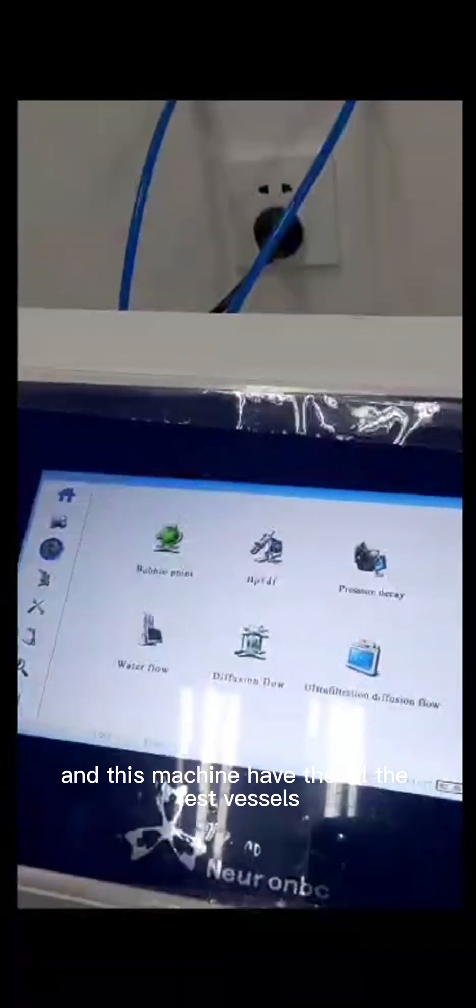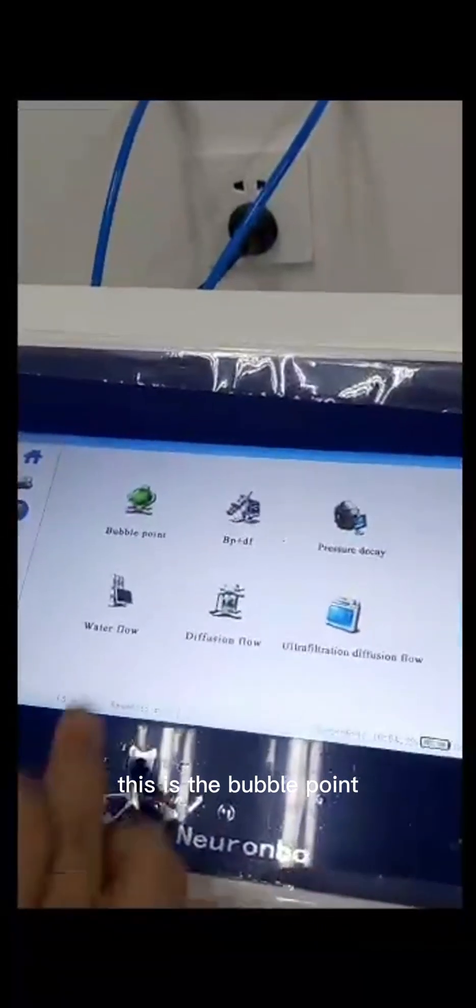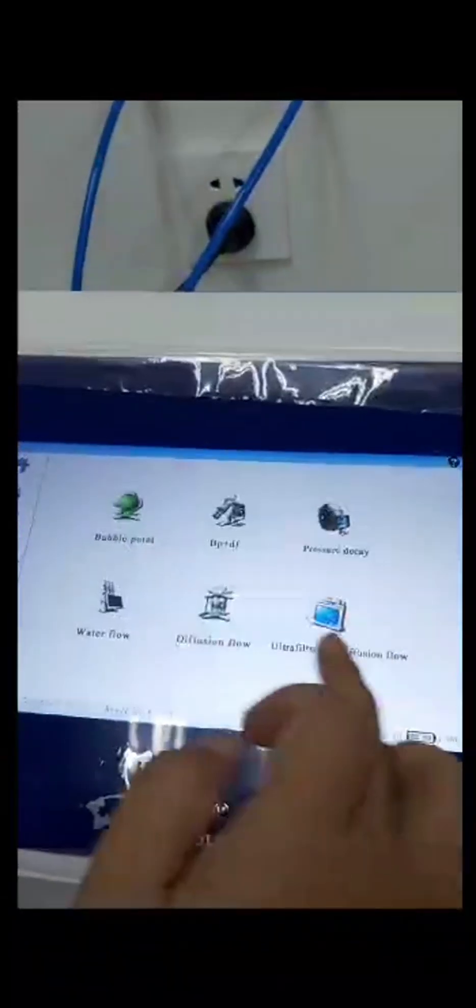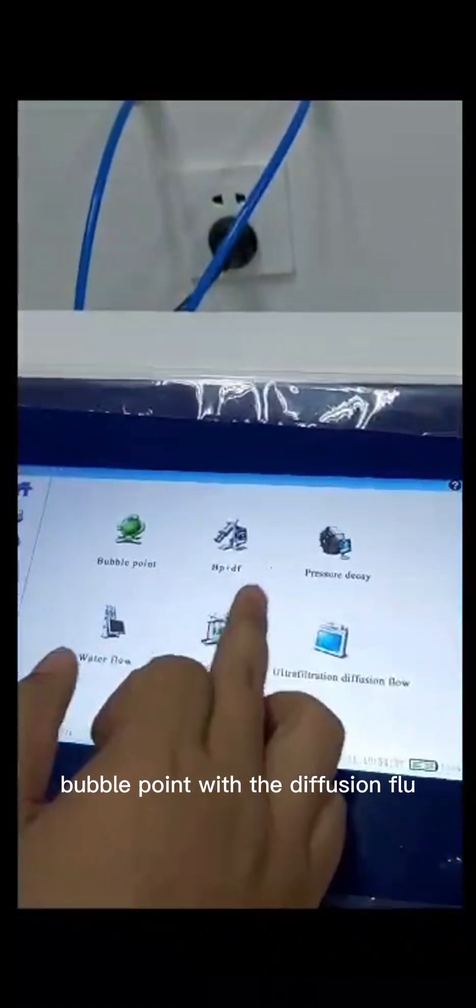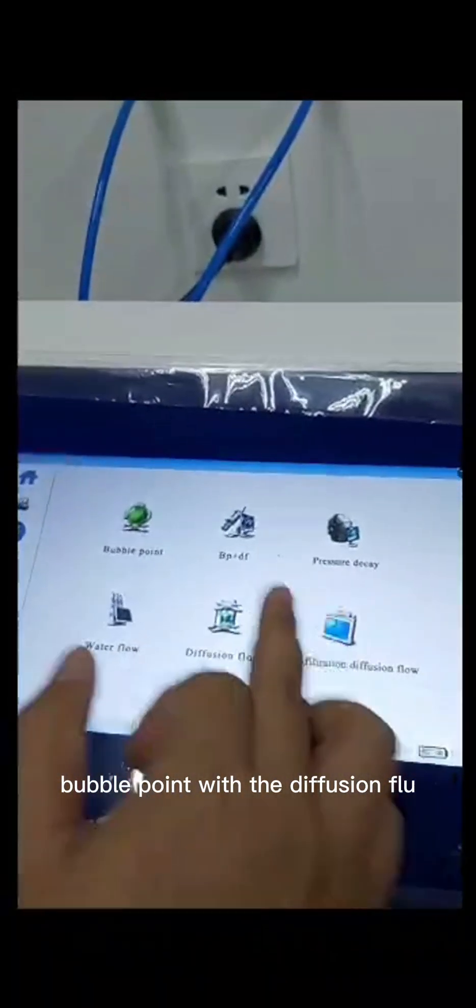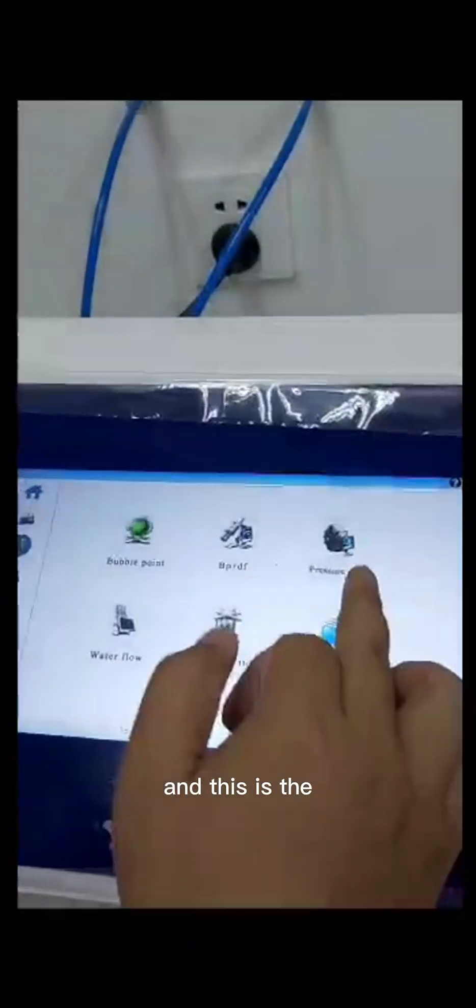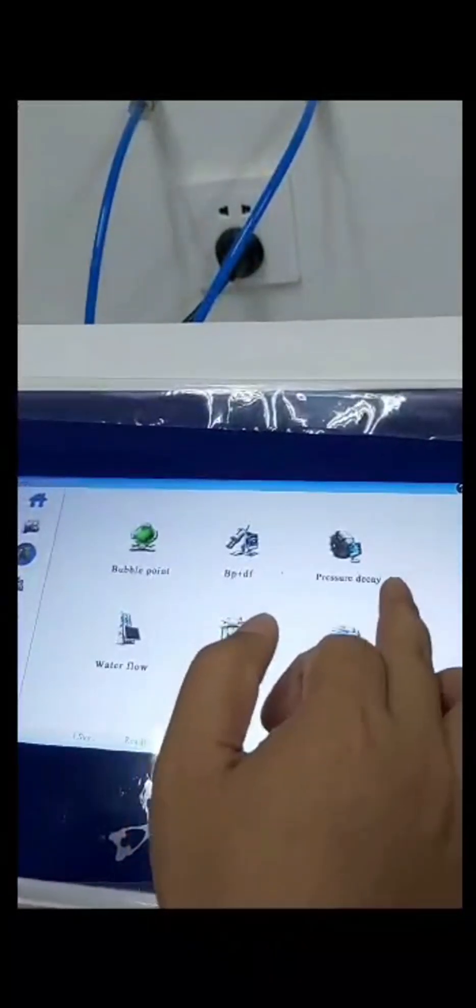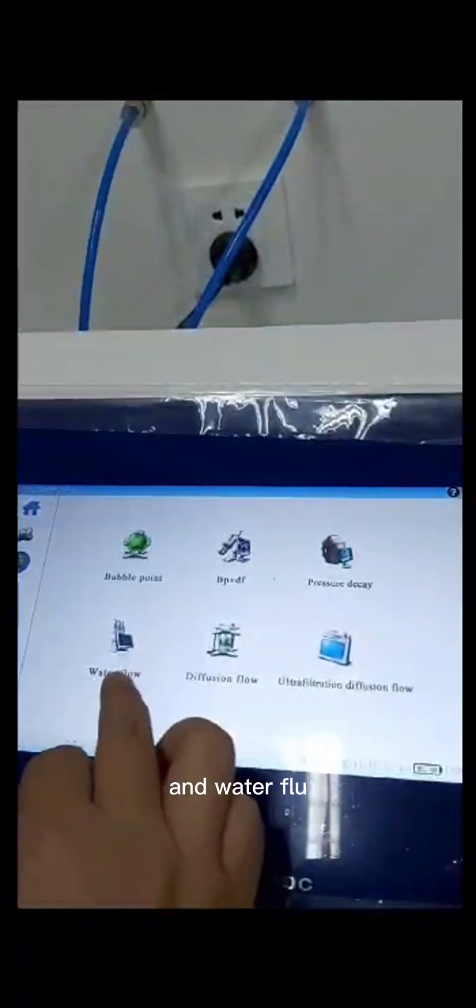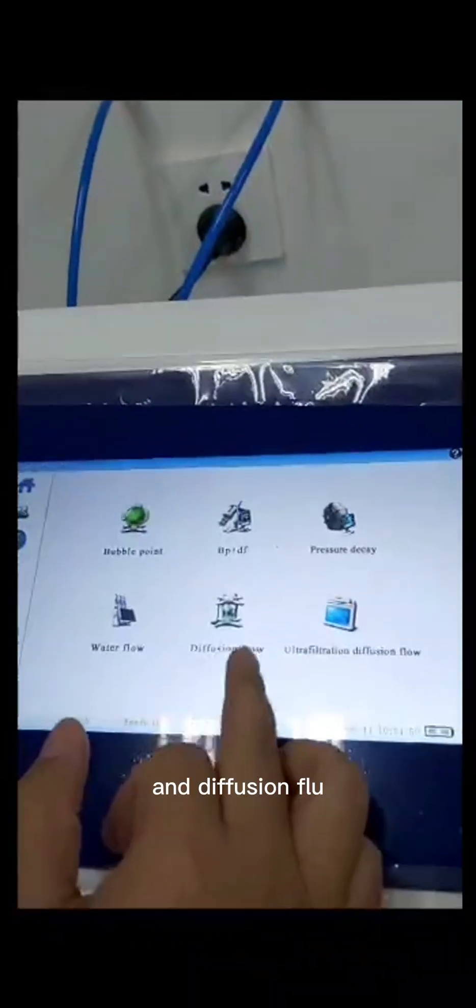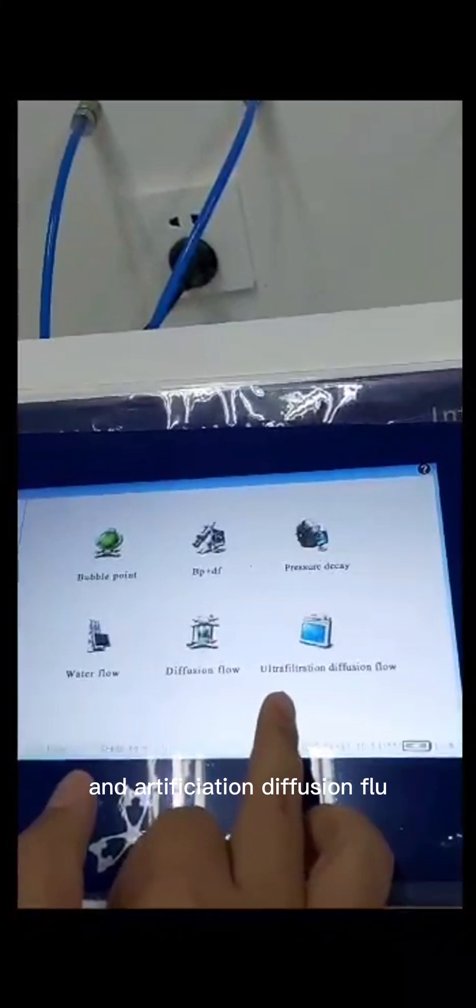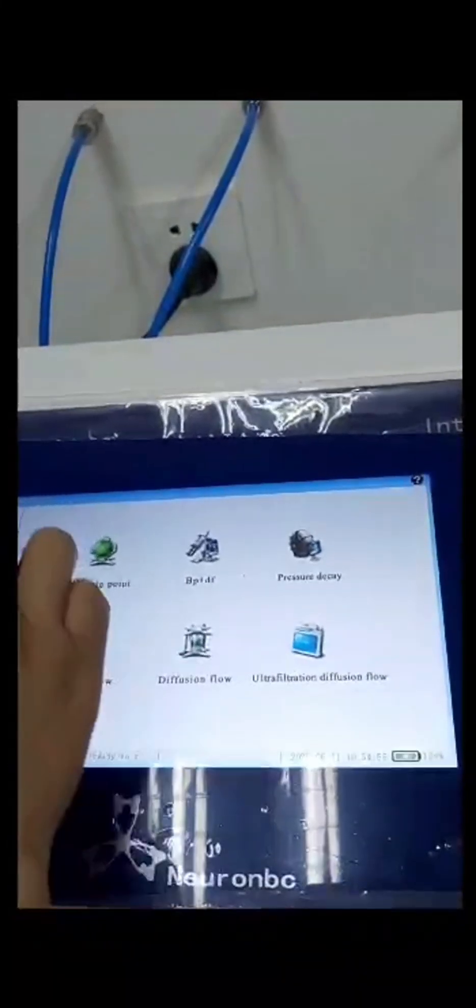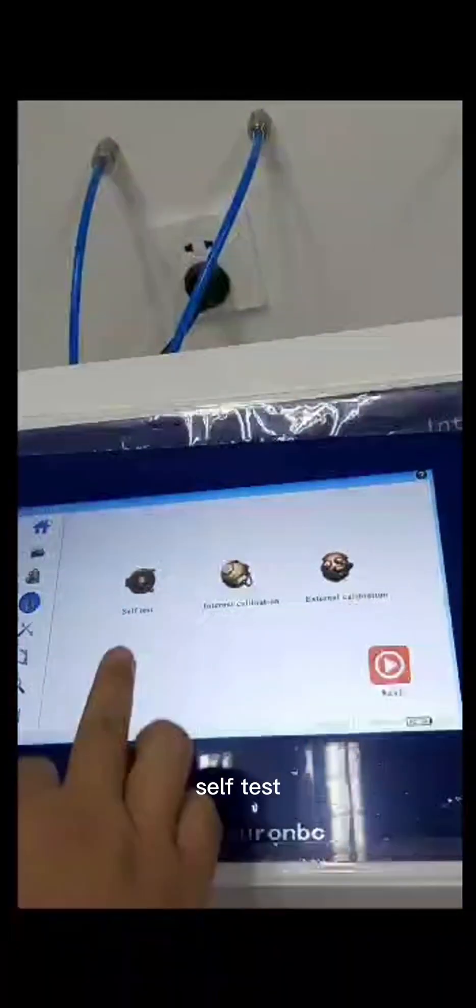This is the test. And this machine has all the test methods. This is the bubble point, and this is the bubble point with the diffusion flow. And this is the pressure degree, and water flow, and diffusion flow, and artificial diffusion flow.